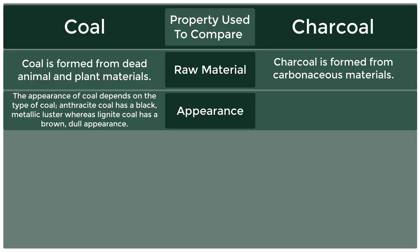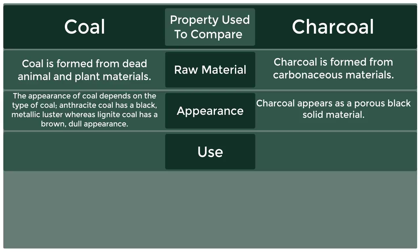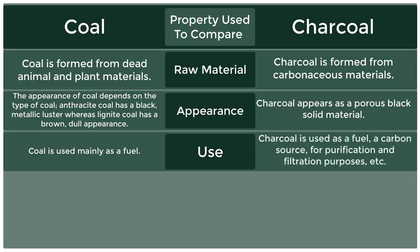Appearance of coal: the appearance of coal depends on the type — anthracite coal has a black metallic lustre, whereas lignite coal has a brown dull appearance. Appearance of charcoal: charcoal appears as a porous black solid material. Use — coal: coal is used mainly as a fuel. Use — charcoal: charcoal is used as a fuel, a carbon source, and for purification and filtration purposes.